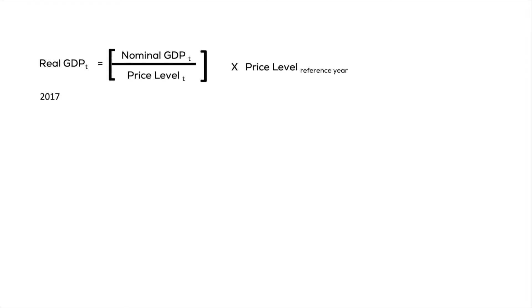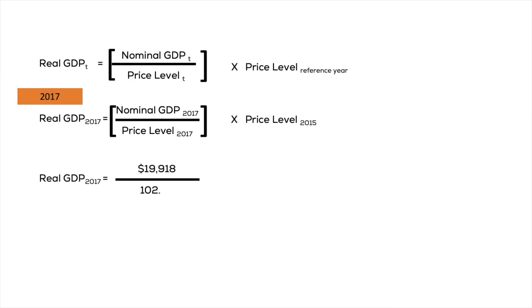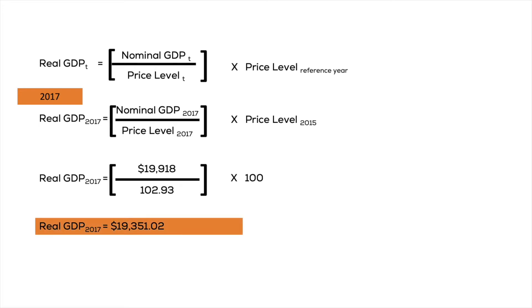Real GDP of year T is equal to nominal GDP of year T divided by the price level of year T, then multiplied by the price level in our reference or base year. For 2017, real GDP equals nominal GDP of 2017 divided by the price level of 2017, times the price level of 2015 — the base year. The nominal GDP is 19.9 trillion and the price level is 102.93, so we take 19.9 divided by 102.93 and multiply by 100. The real GDP for 2017 is 19.3 trillion dollars.